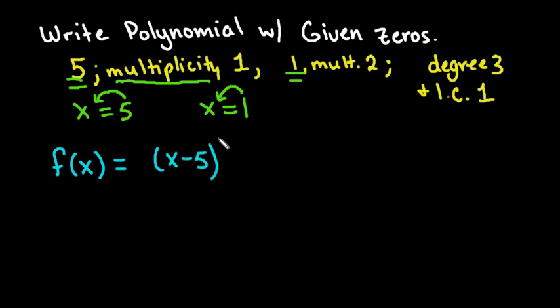Since it's multiplicity of 1, the exponent is understood to be 1 at the top, I don't have to write the 1 when it's multiplicity 1. For the second one, when I bring the 1 to the other side it also becomes a negative. This one, because it's multiplicity 2, I have to put an exponent of 2 up here.